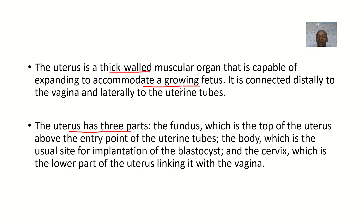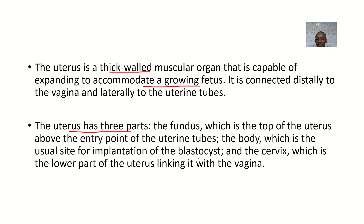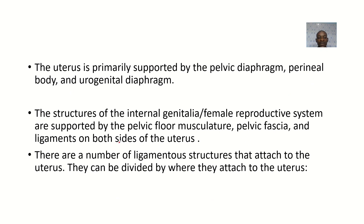We also have the body, which is the usual site for implantation — that's where we have the endometrium for implantation of the blastocyst. Then we have the cervix, which is the lower part of the uterus linking with the vagina distally.